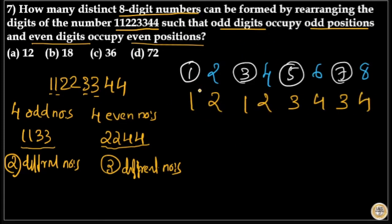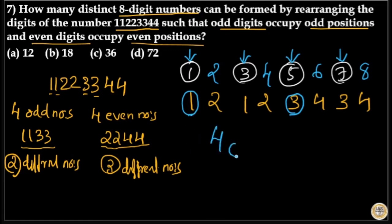We need to find how many such numbers are possible. We have four odd places but only two distinct odd numbers, since 1 is repeated and 3 is repeated. So the number of ways to place odd numbers on odd places is 4C2. Similarly, we have four even places but only two distinct even numbers, since 2 and 4 are each repeated. So the number of ways to place even numbers on even places is also 4C2. Therefore, the answer is 4C2 × 4C2.